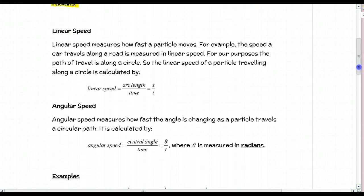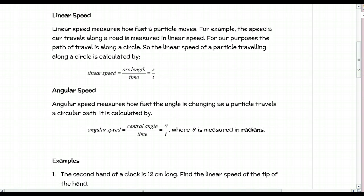Moving to linear speed - this is what you'd think of when driving your car or running on a track. Linear speed measures how fast a particle moves. For our purposes, the path of travel is along a circle. Linear speed is calculated by arc length divided by time. It's really distance divided by time; in this case, our distance is arc length.